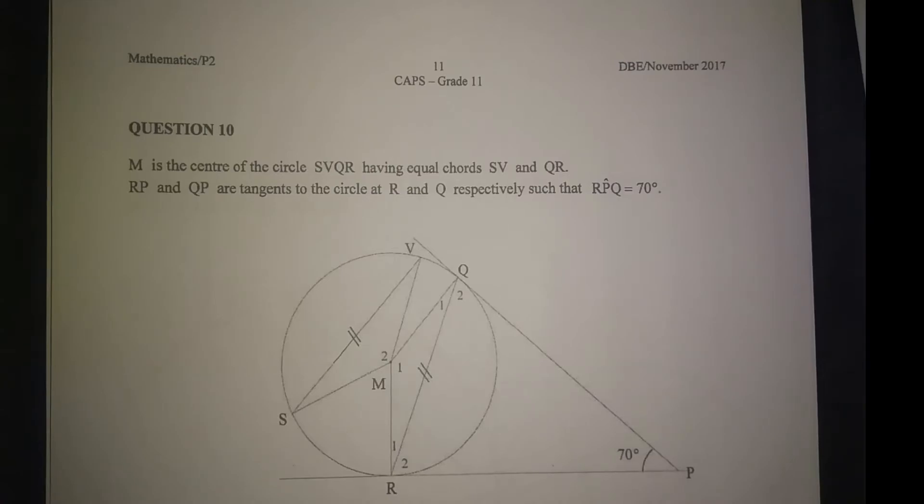Right, question 10. Question 10: M is the center of the circle S, V, Q, R having equal chords S, V and Q, R.